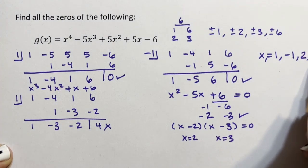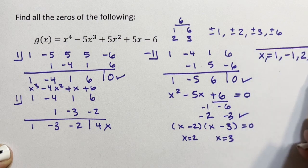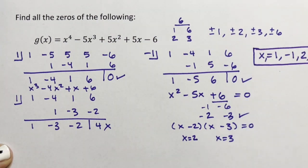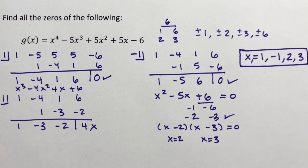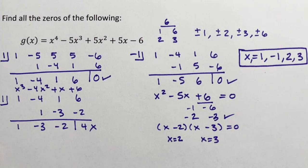So here are our four zeros. We are not asked to do this, but for a little bit of extra credit, if we were asked to come up with the original factored function...